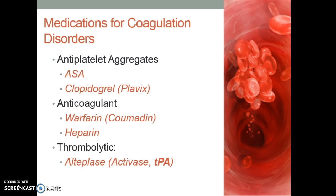Categories of medications — there are basically three for coagulation: antiplatelet aggregates, anticoagulants, and thrombolytics. It's important to differentiate. A lot of times people want to put everything into the anticoagulant category, but that's not correct. From here on out, I want you to focus on being accurate when naming your medications.